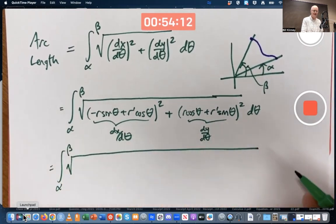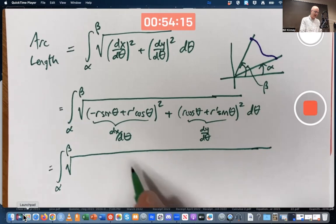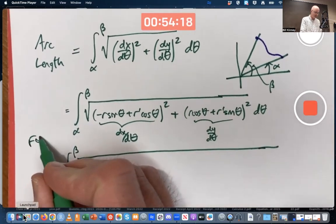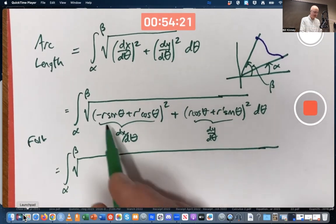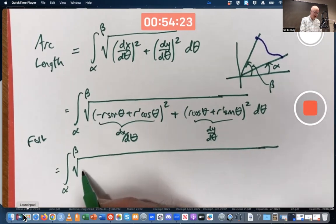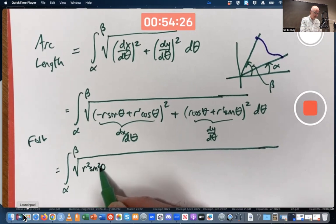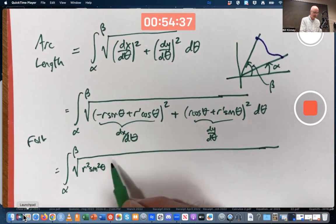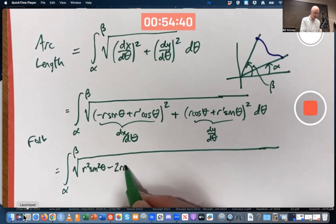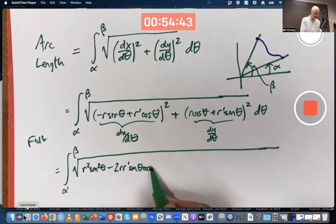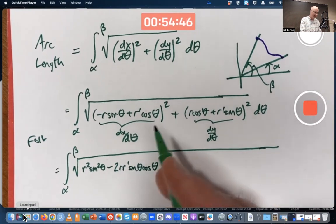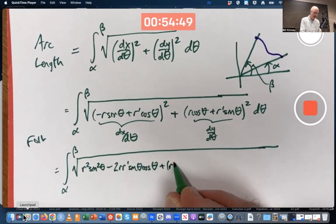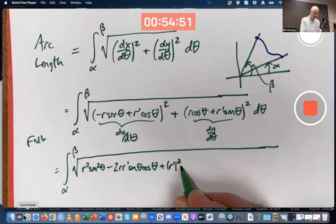Expand it out. Make your square root even longer here. I'm going to foil because I'm squaring binomials. Negative r sin θ squared is positive r² sin² θ. That's first times first there. Outside times outside and inside times inside gives you, in both cases, the product of these two things. So we have two of those. So we get minus 2r r' sin θ cos θ. And then last times last is going to be r'² cos² θ.